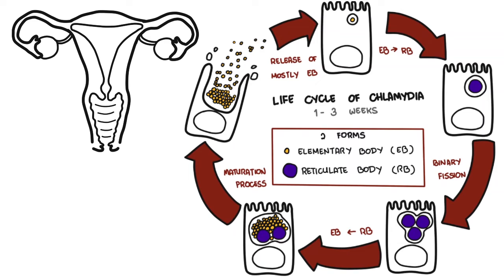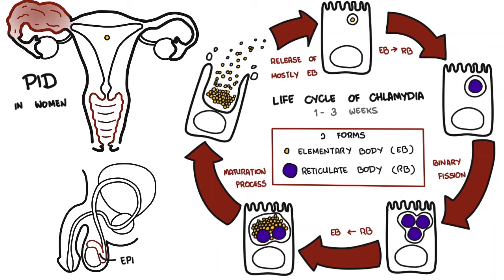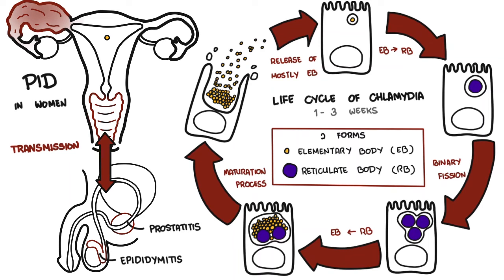Due to its unique life cycle, Chlamydia trachomatis cannot be grown in routine bacterial culture. These infected epithelial cells cause urethral inflammation or cervical inflammation in women. In some cases, the infection can migrate up into the reproductive tract and cause pelvic inflammatory disease in women, and epididymitis or prostatitis in men.